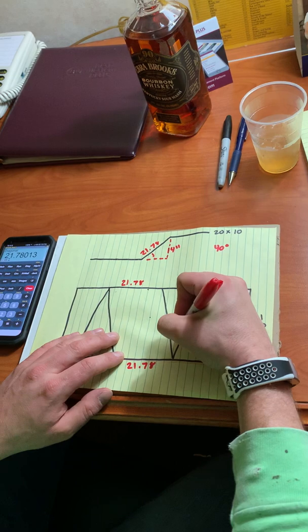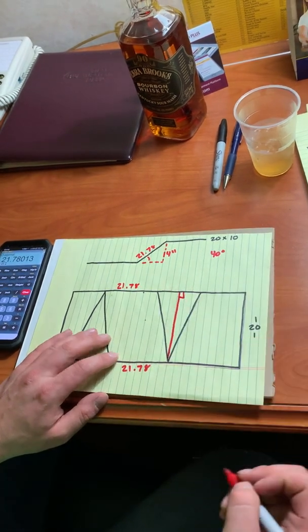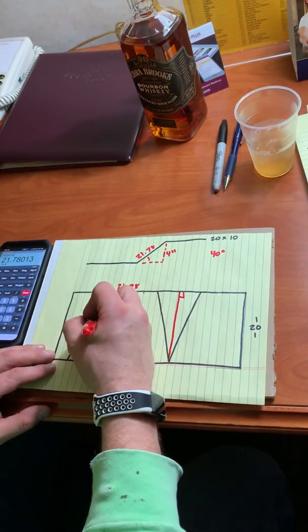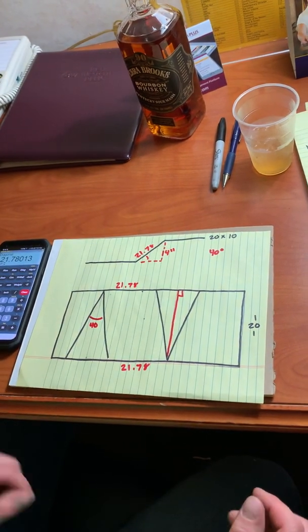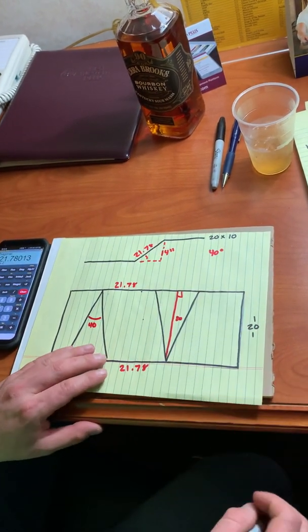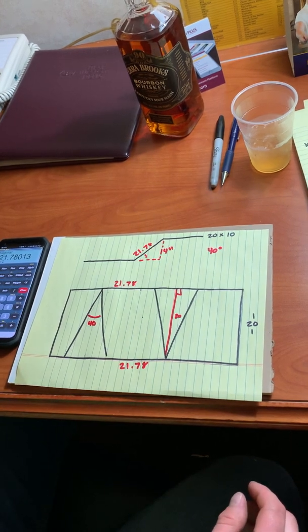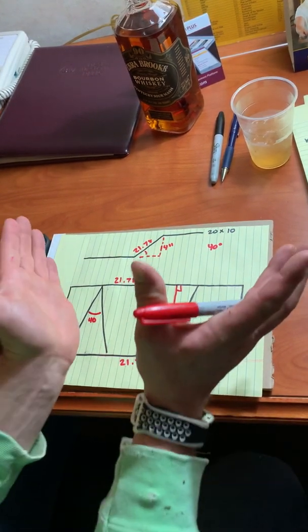So we can cut this triangle in half, and we'll know that this is 40 degrees. So half of that would be 20. That'll give us half of our isosceles triangle.